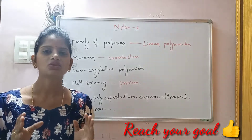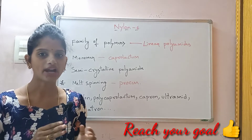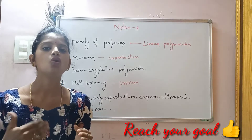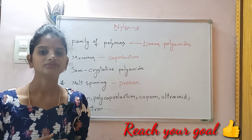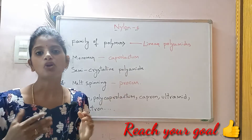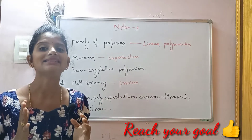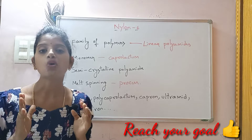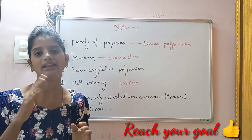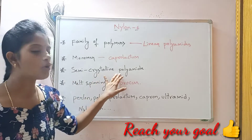Nylon 6 is a family of polymers called linear polyamides — linear means stripe polyamides. It is made from a monomer called caprolactam. Caprolactam reacts with itself only and it has six carbon atoms; its molecular formula is (CH₂)₅ CO NH. It is a semi-crystalline polyamide.